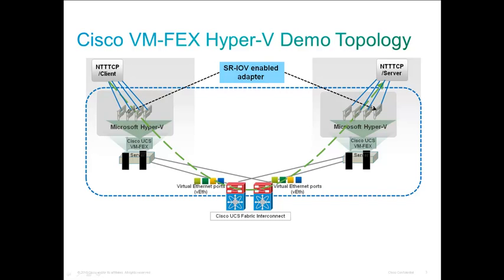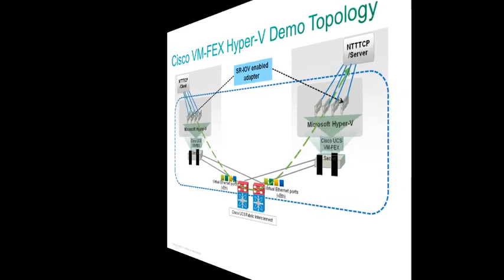Up to this point, we have completed the Hyper-V with VFX configuration. Along with the pre-configured settings, we now have two Hyper-V hosts with one virtual machine on each blade. For the last part of this video, we will use the Windows NTTTCP network testing tool to demonstrate the QoS capability of VFX. One virtual machine will be configured as the NTTTCP client to send traffic, and the other as the NTTTCP server to receive traffic. We will use a 10 gigabit QoS policy initially and then switch to a 1 gigabit policy to observe the change.